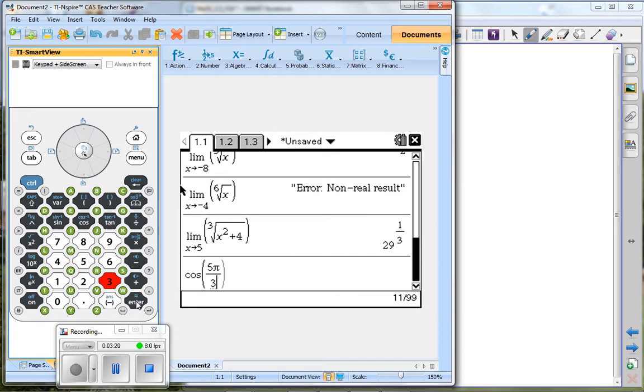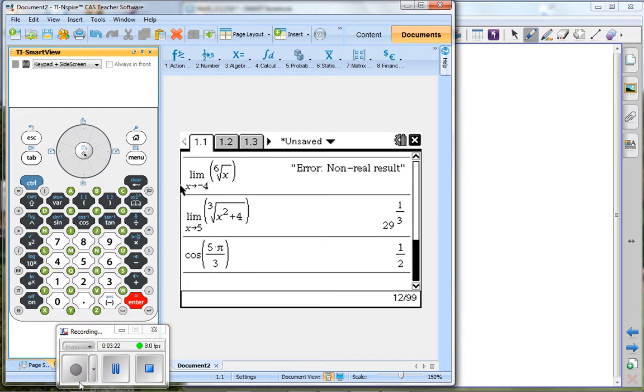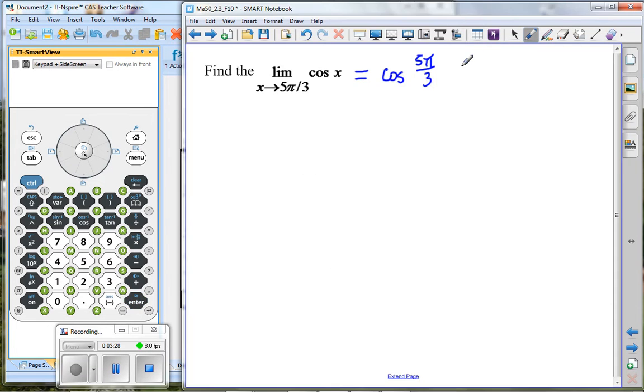If I take the cosine of 5π divided by 3, and if I press enter, we're going to get now the exact answer, because that is an exact value of one-half. And again, I am going to explain all of this in a more conceptual manner as to what exactly that represents when I see you in person.